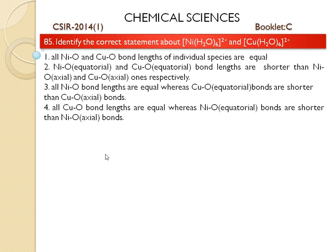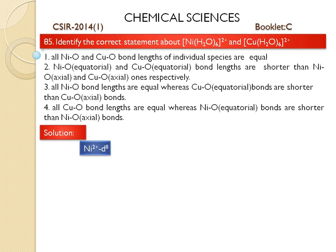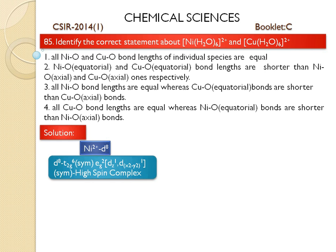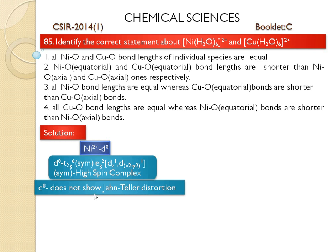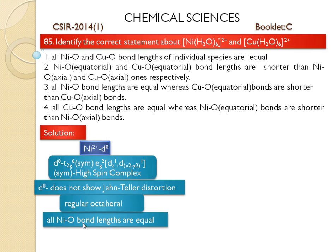Now we discuss the nickel-oxygen bond length. In this complex, the nickel ion exists as a d8 configuration. In the presence of aqua ligands, the d orbitals are split into T2G6 and EG2. Since the T2G and EG orbitals are symmetrically filled, it will not have Jahn-Teller distortion. The structure will be a regular octahedral, and because of this, all nickel-oxygen bond lengths are equal.